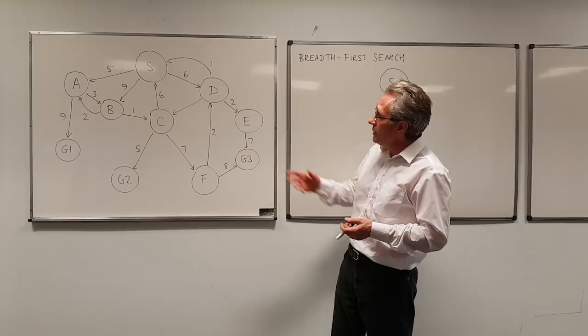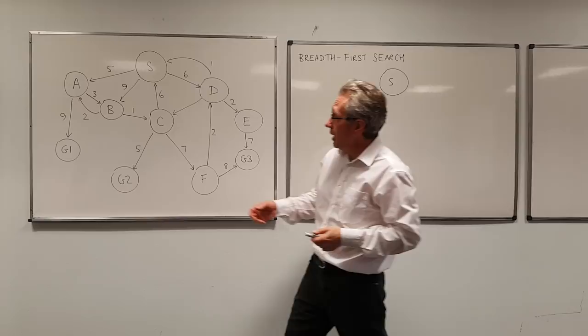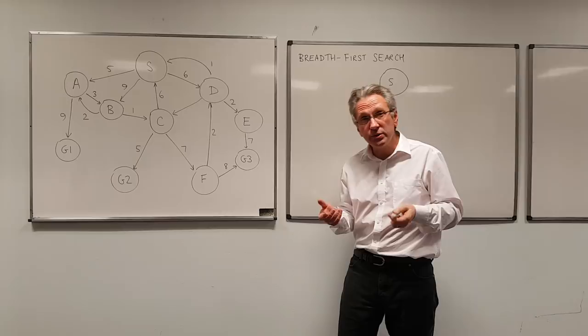And in this search space, S is the initial state, then there are states A, B, C, D, E, and F, which are intermediate states, and then there are states G1, G2, and G3. All of those are goal states.